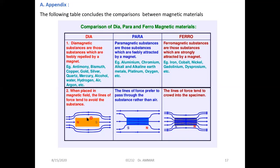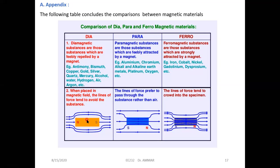In the case of diamagnetic materials, the magnetic field lines will avoid this material and will not transfer through it. So this type of material cannot be used to transfer the flux. For example, copper is useful to transfer electricity, but it's not useful to transfer the magnetic field or magnetic flux. Other examples include gold, silver, alcohol, and air.